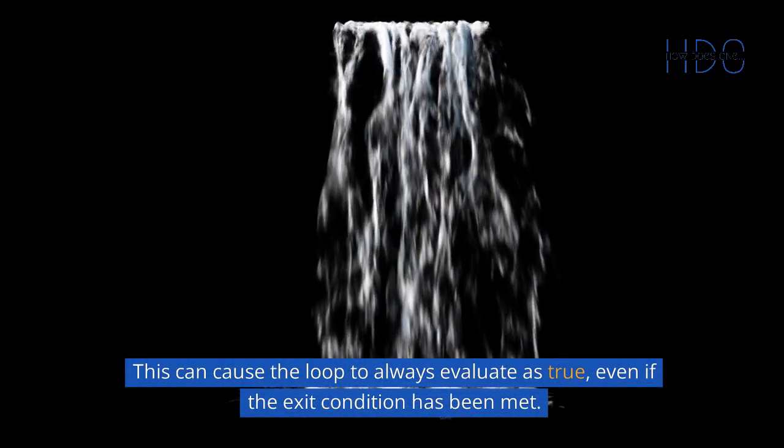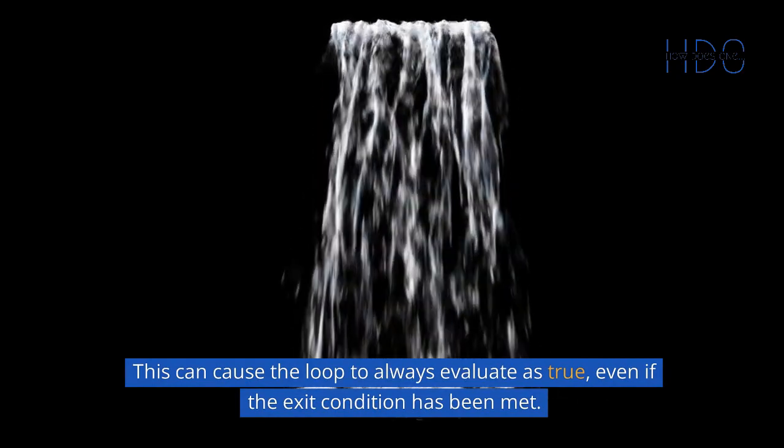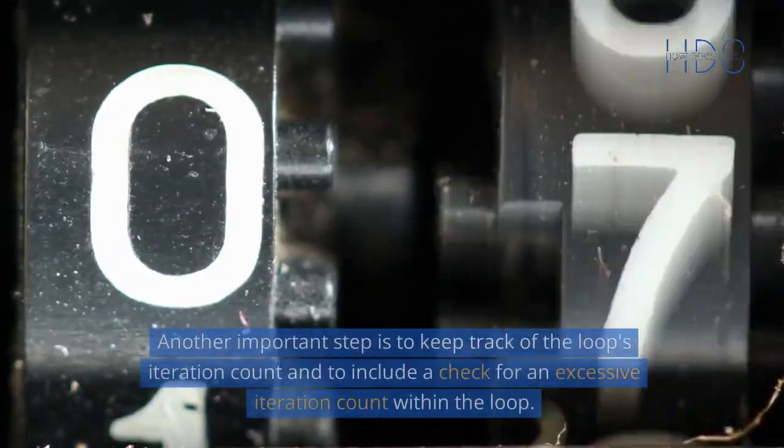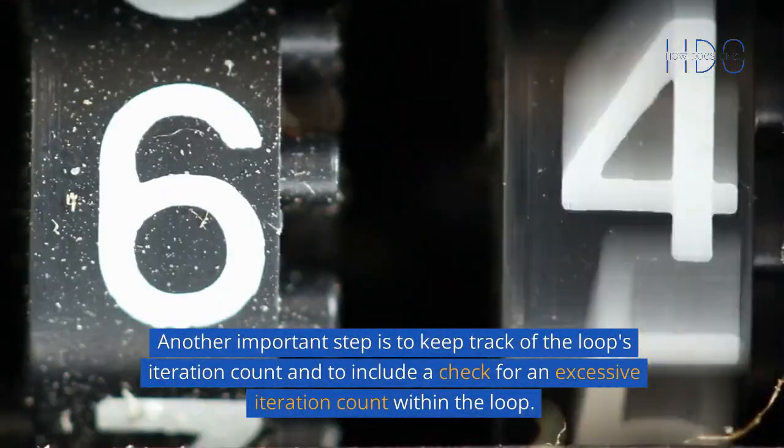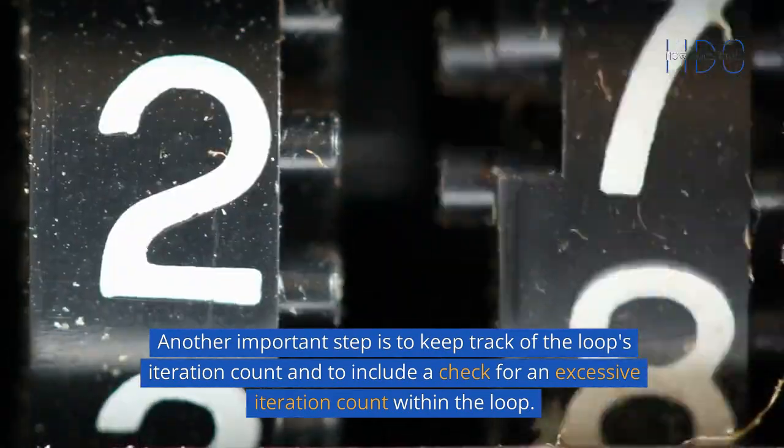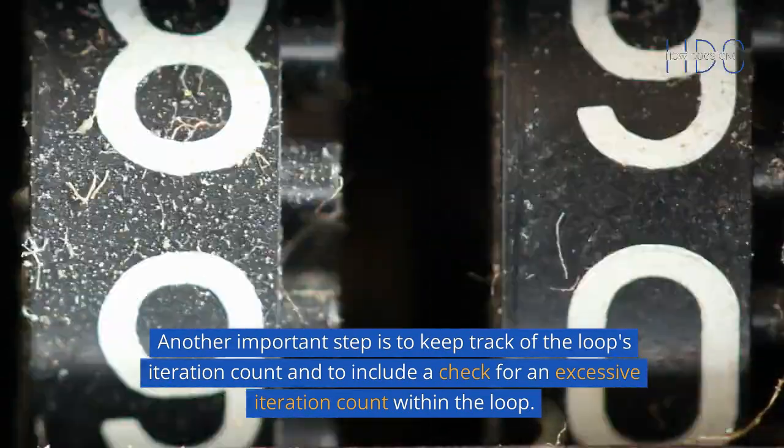This can cause the loop to always evaluate as true, even if the exit condition has been met. Another important step is to keep track of the loop's iteration count and to include a check for an excessive iteration count within the loop.